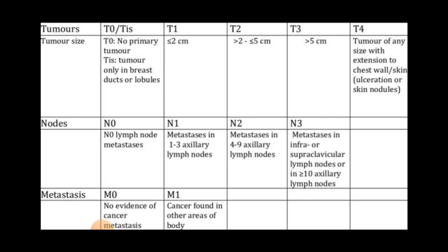N is nodal metastasis. N0 is when no lymph nodes are affected. N1 is when there are metastases to one to three axillary lymph nodes. N2 is when there are metastases to four to nine axillary lymph nodes. N3 is when there are metastases to more than ten axillary lymph nodes, and there are metastases in infra- or supraclavicular lymph nodes as well.